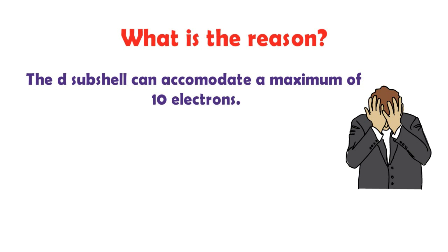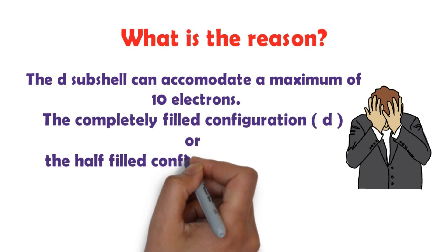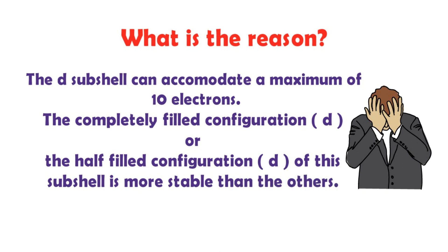I think it's a 10-electron configuration. The d-block full-filled configuration — d10 — is the fully-filled configuration. The half-filled configuration gives that element extra stability. In this case, we have to adjust for the extra stability.